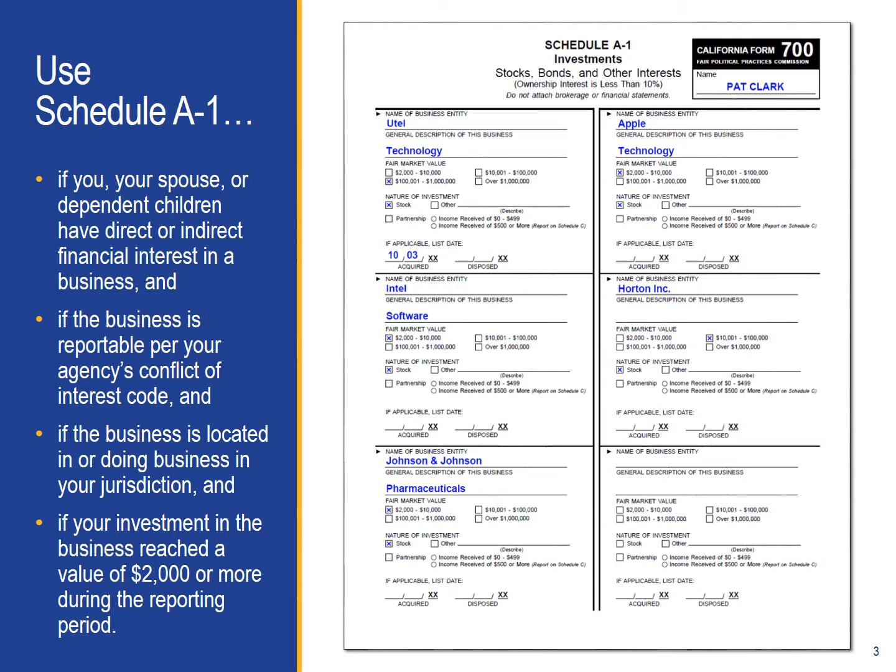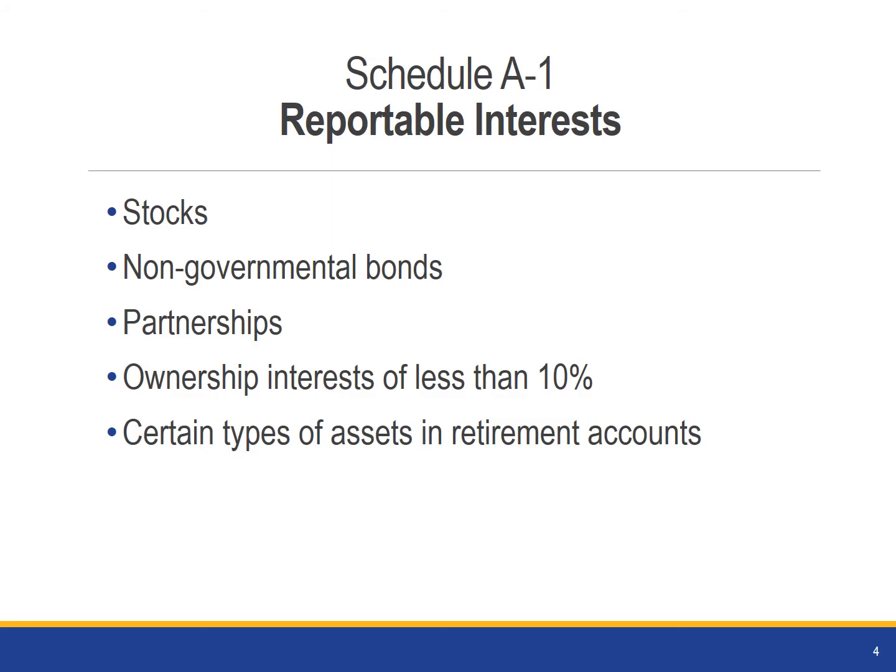Please note that you may find more information about Conflict of Interest Codes in our Need to Know video. Types of reportable investments for Schedule A-1 include stocks, corporate bonds, and any interest you may have in an entity where your ownership interest is less than 10%. This may include some assets in a managed investment fund, like a 401k or other such retirement account.